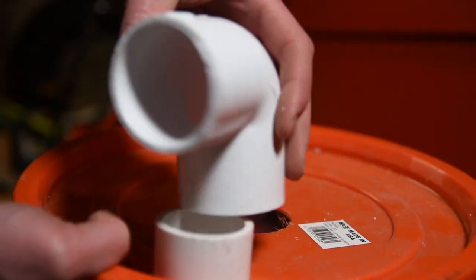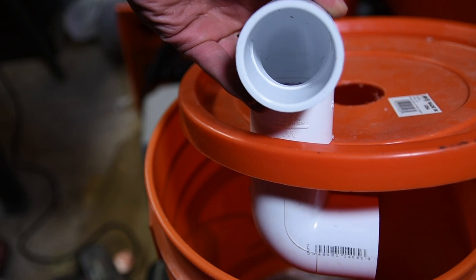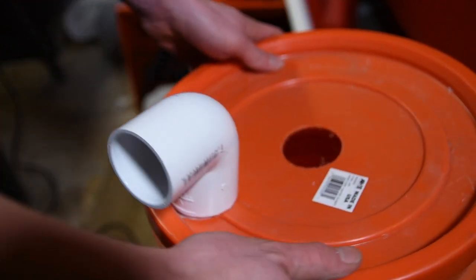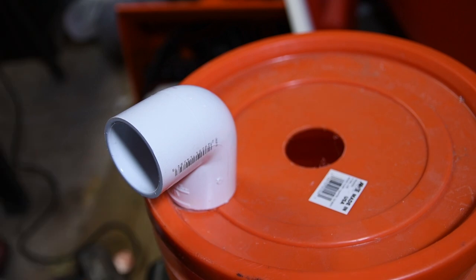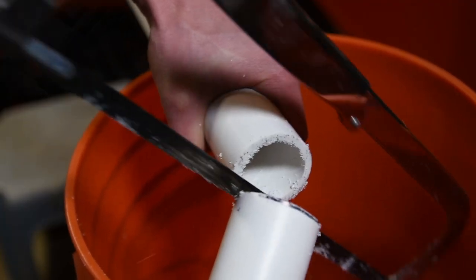The second 90-degree elbow will go on top of the bucket and face out. The next step is to set up the part that connects to the shop vac. You'll need the second section of PVC pipe that you cut earlier.